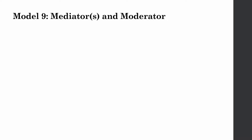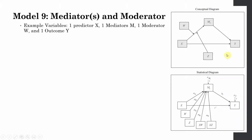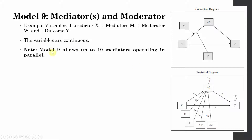In this session we are going to focus on how to test Model 9 using Hayes Process Macro. In this model we have got 1 independent variable, 1 dependent variable, 1 mediator and 2 moderators that are moderating this particular effect. In this case there are 2 moderators that are moderating the indirect effect from X to Y through M. Model 9 allows up to 10 mediators operating in parallel. In this example all variables are continuous.